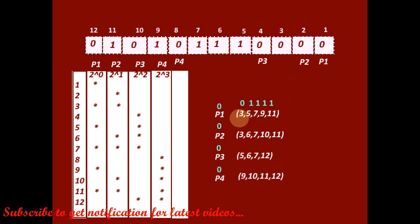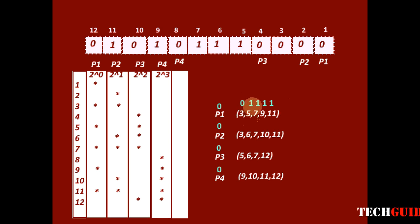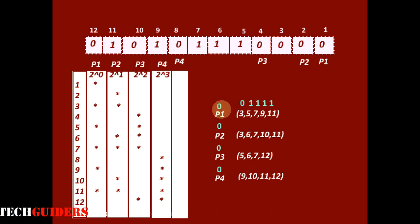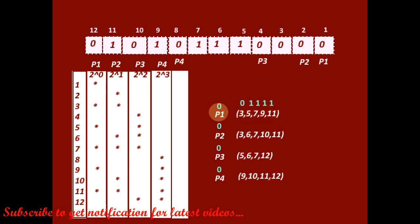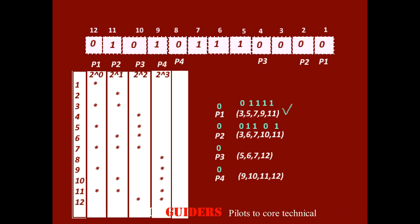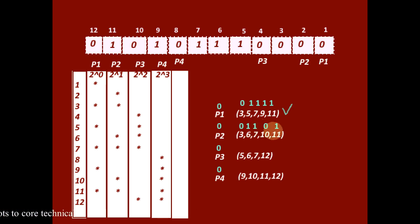Now, bit 3 is 0, bit 5 is 1, bit 7 is 1, bit 9 is 1, and bit 11 is 1. Check the value of p1. For p2: bit 3 is 0, bit 6 is 1, bit 7 is 1, bit 10 is 0, bit 11 is 1. Check the value of p2.